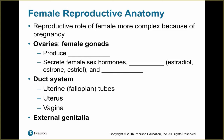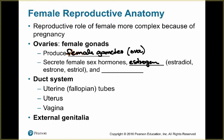Ovaries are basically the female gonads and they produce the female gametes — the sex cells. The female gamete is an ova. The ovaries also help in secreting female sex hormones: estrogen (which in other forms is estradiol, estrone, and estriol) and progesterone.